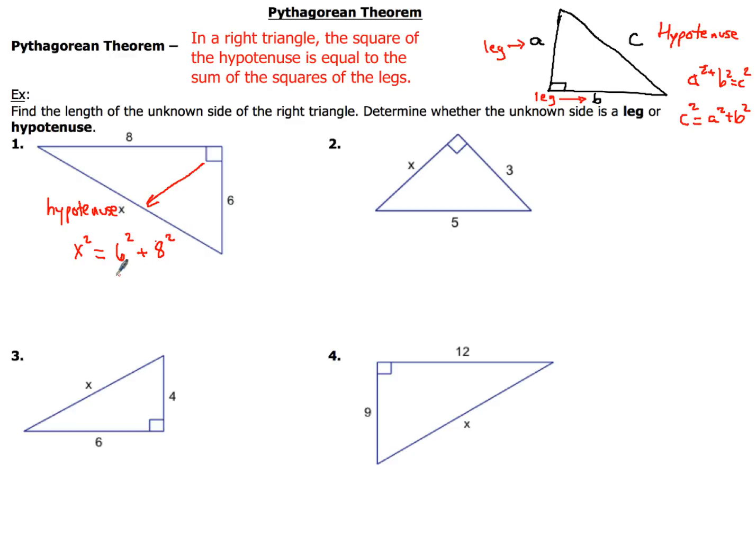So 6 squared is a grand total of 36. 8 squared is, I'm sorry, 64. I'm thinking ahead here. So I get X squared equals 36 plus 64, and this is how I want you guys to show your work, just like this. So X squared equals, if you add those up, you get 100.